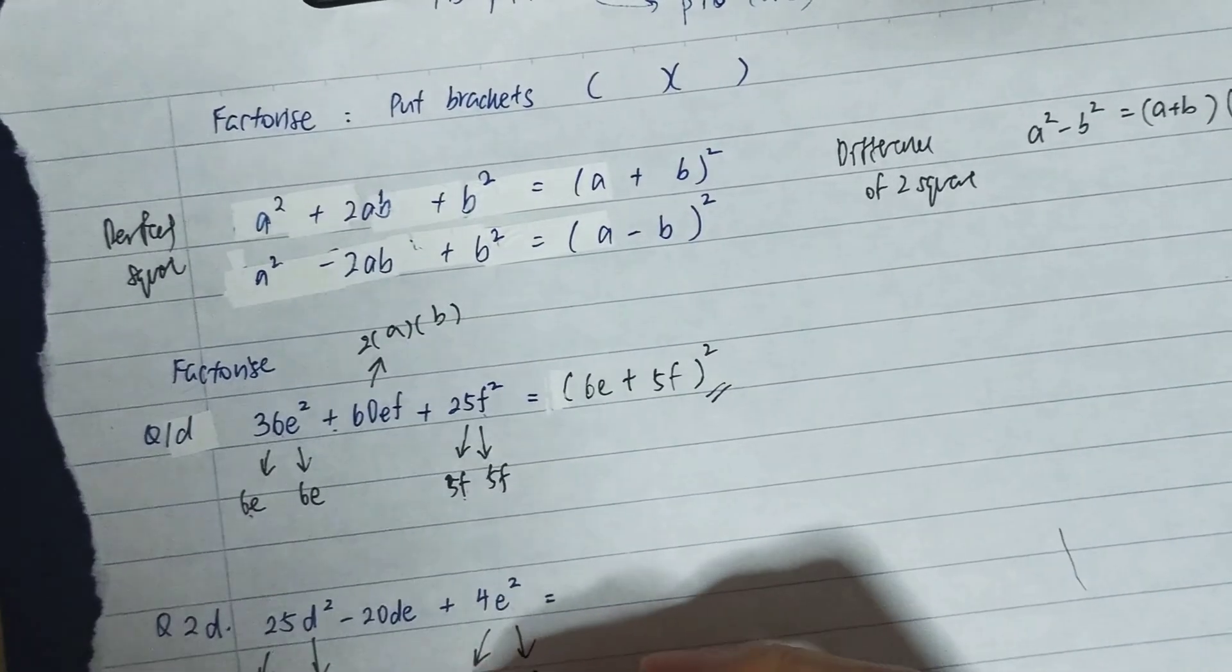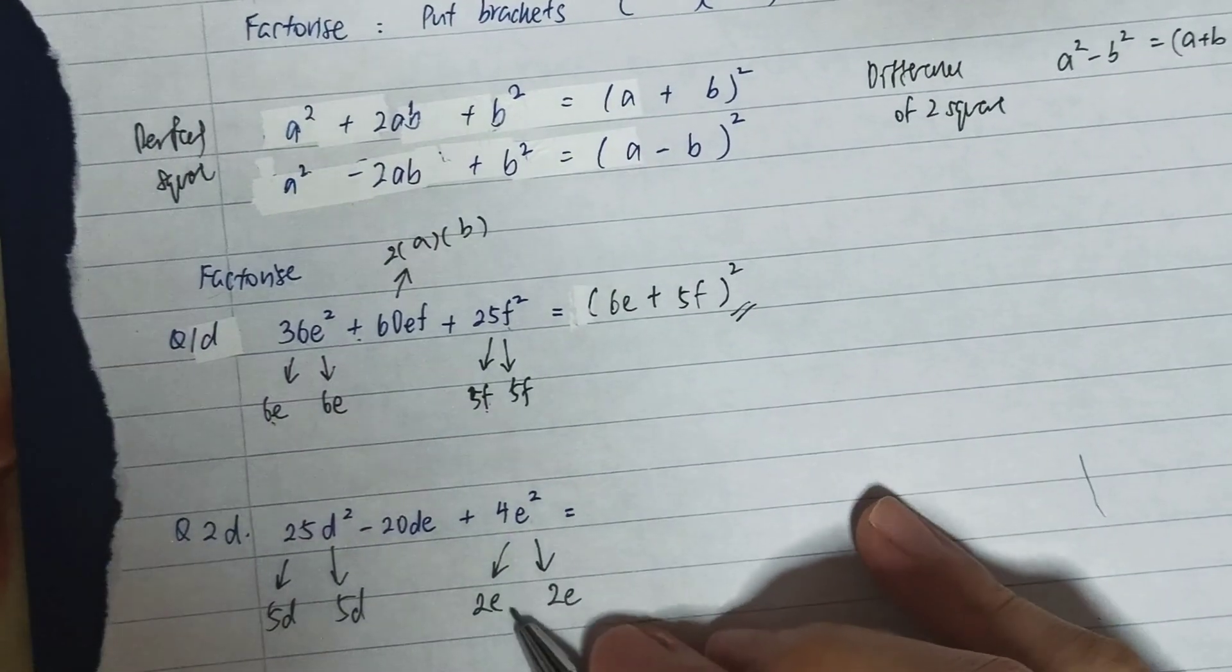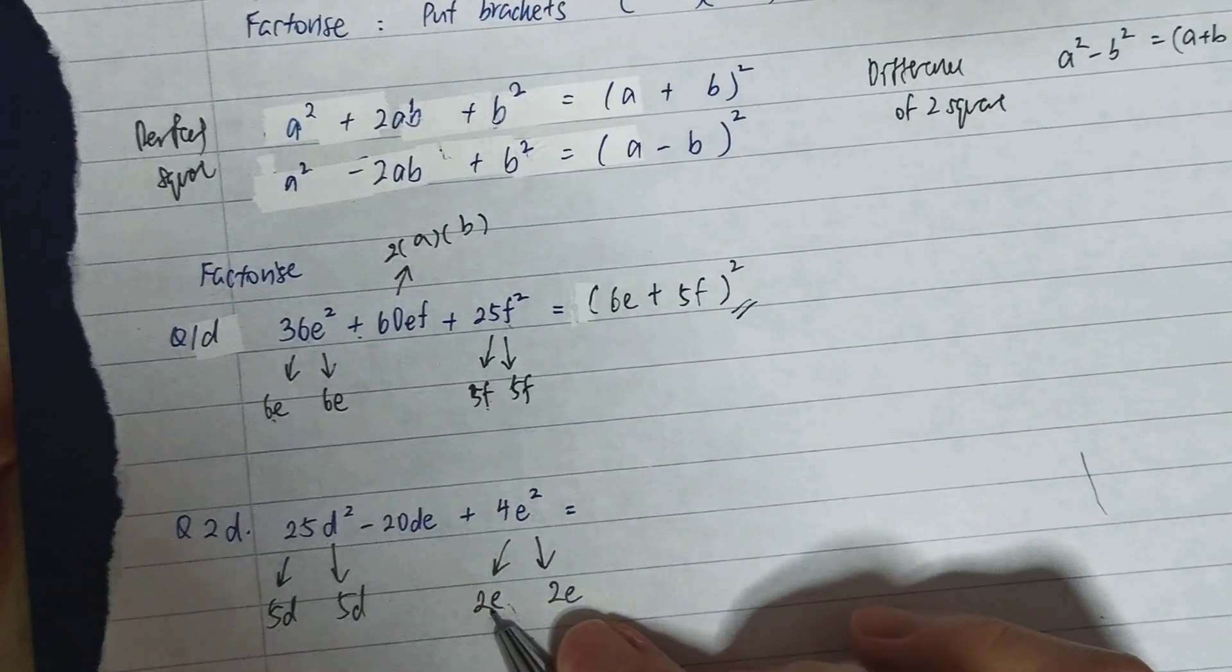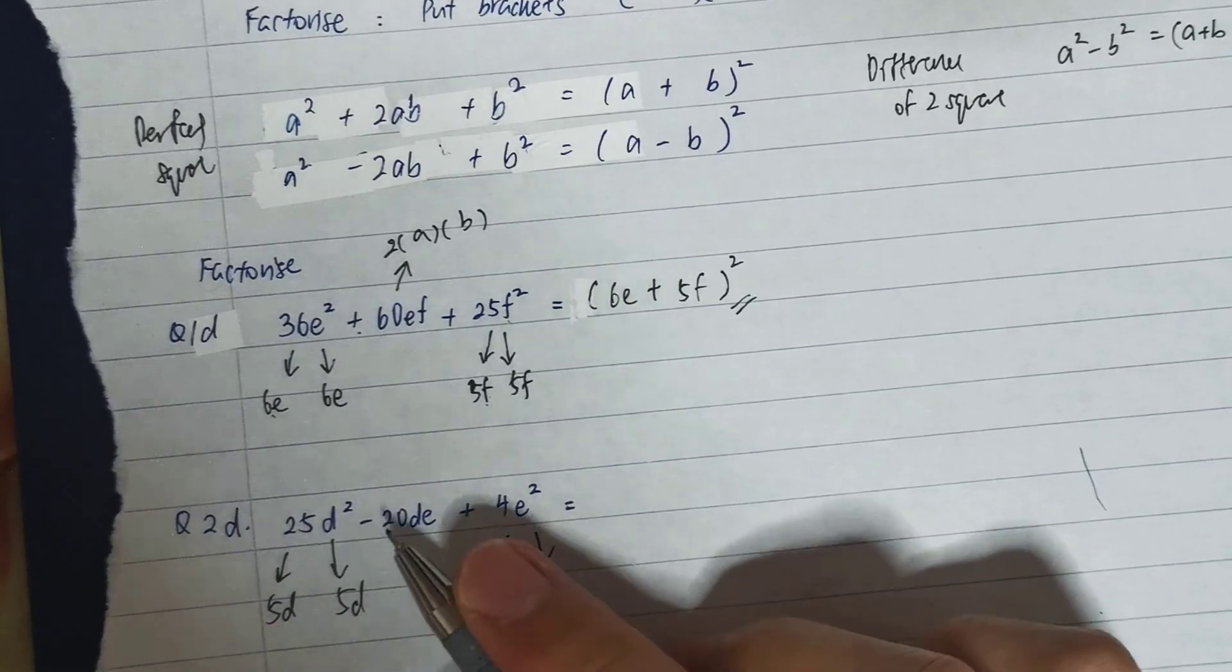If my a is 5d, if my b is 2e, 5d times 2e will be 5 times 2, which is 10. 10 times e times d is 10ed. So 10ed times -2 is -20de.